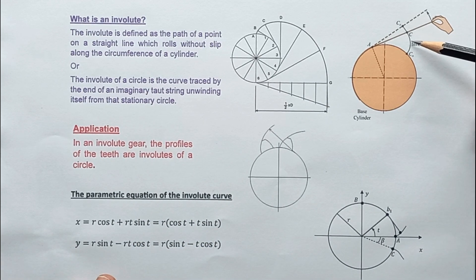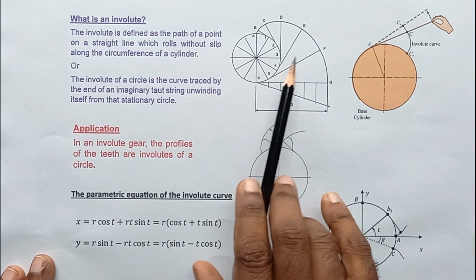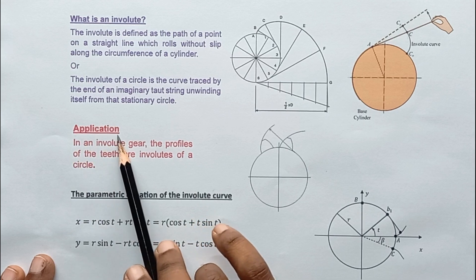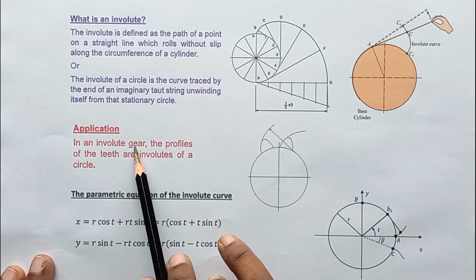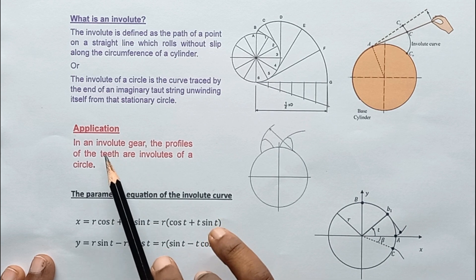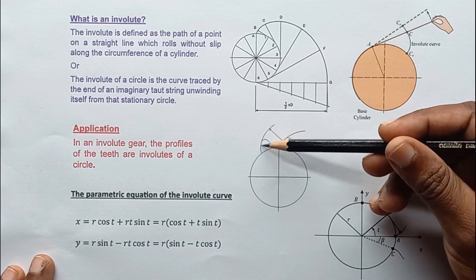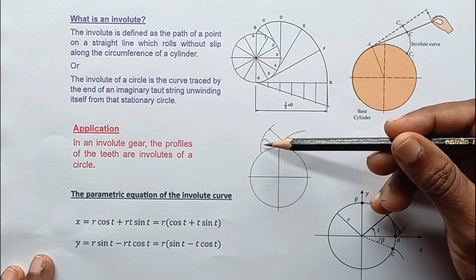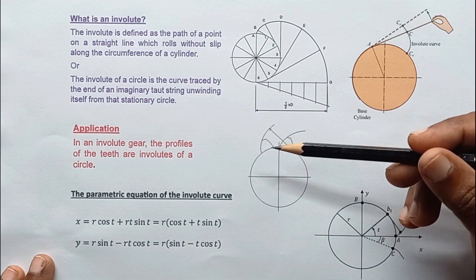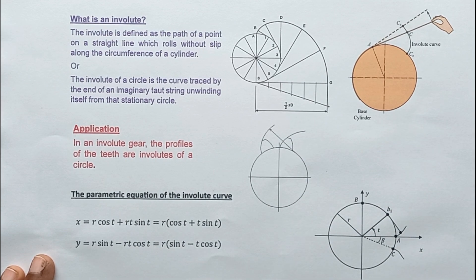Another definition: the involute of a circle is a curve traced by the endpoint of an imaginary taut string unwinding itself from a stationary circle. When unwinding the string from the circle, a point on the string follows the involute curve. This curve is important because of its application in involute gears — the profile of the gear teeth is an involute of a circle, which allows smooth power transmission between gears.